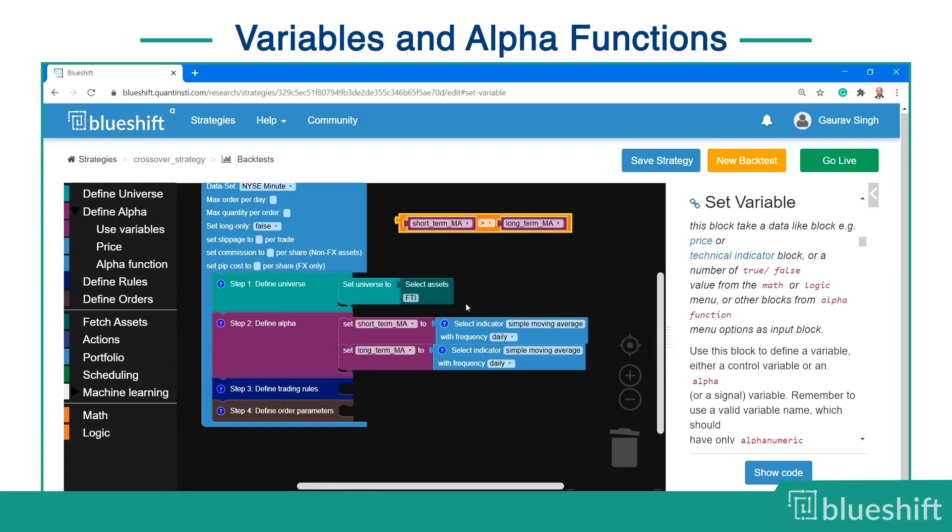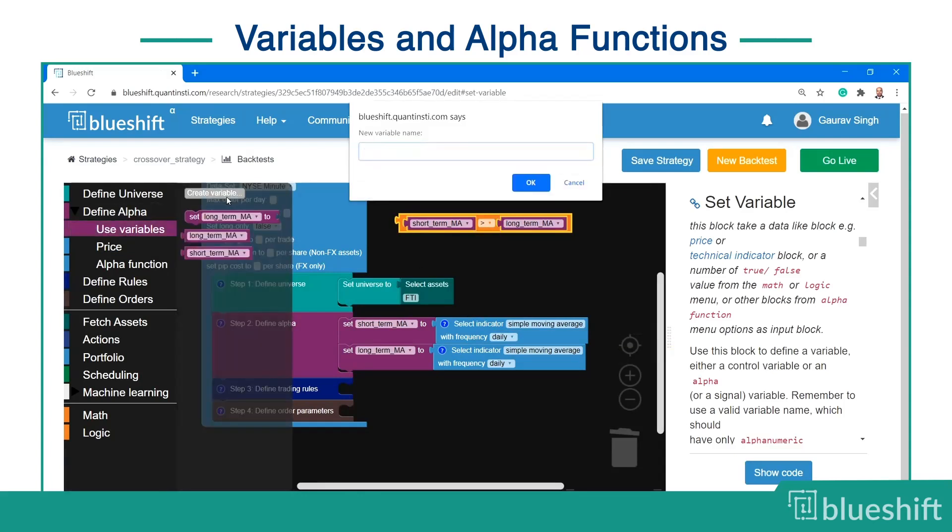You can store this in the golden cross variable so that it can be accessed easily later on.